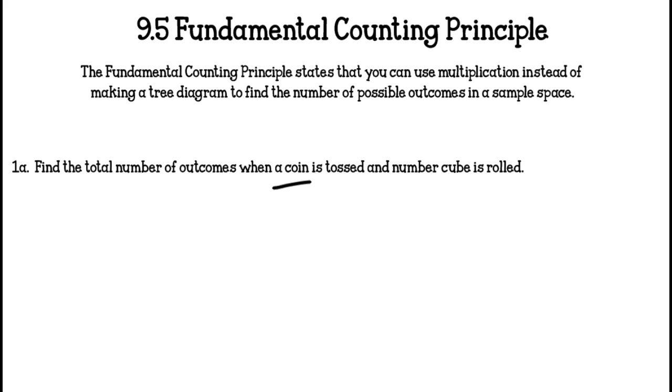So you look at a coin. How many options are there on a coin? There's heads or tails, so that's two options. And on a number cube there are six options because there are six sides. So you do 2 times 6 and your total is 12 outcomes.